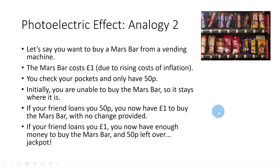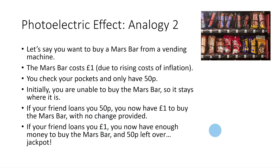With the 50p loan you have exactly £1 to buy the Mars bar — photoemission takes place but nothing else; electrons are just emitted and no more. However, with £1.50 you can buy the Mars bar and still have 50p left over — the same as incident photons having energy greater than the work function, so photoelectrons are emitted and move off with kinetic energy, just like that leftover 50p.